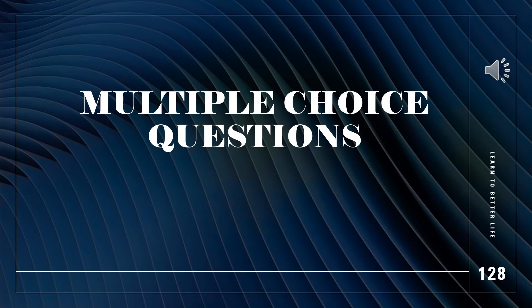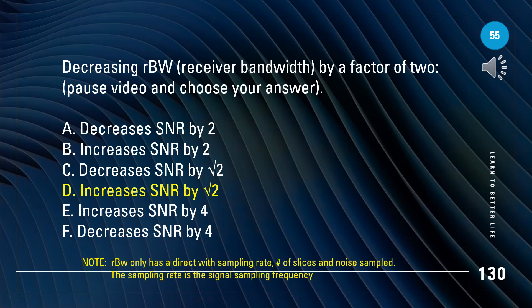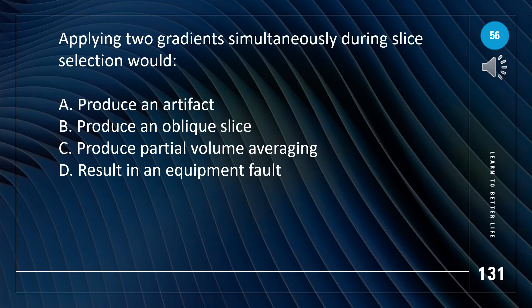Multiple choice questions to test what we have learned. Decreasing receiver bandwidth by a factor of 2 — the answer is D: increases SNR by the square root of 2. Applying two gradients simultaneously during slice selection — the answer is B: produces an oblique slice.